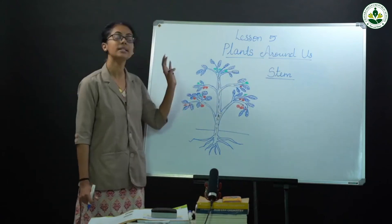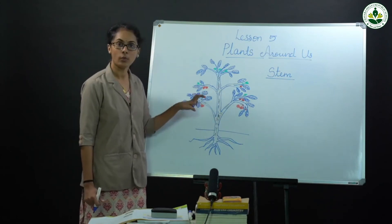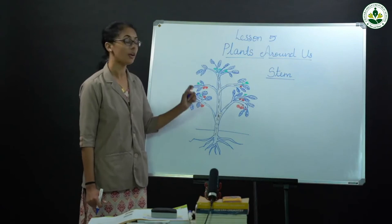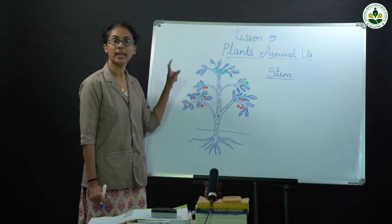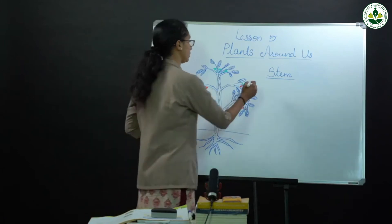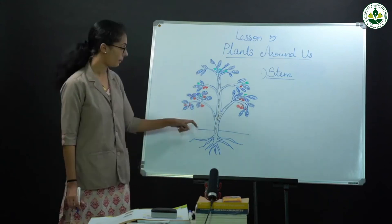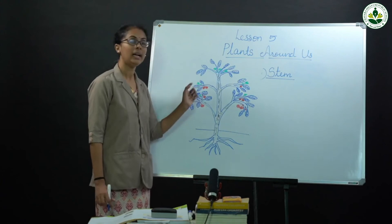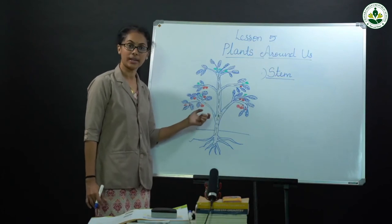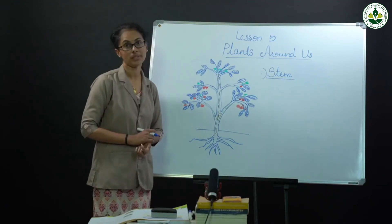So the functions of the stem are: the stem supports the plant and it supports other parts of the plant like leaves, fruits, and flowers. The stem also transports water and minerals from the root to other parts of the plant. These are the functions of the stem.